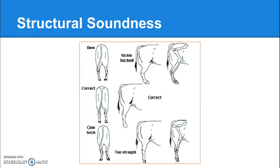If you look at the hind end of the animal from directly behind, you want to draw a straight line from the point of the hip all the way down through the middle of the foot. If they are bowed out, they're going to be toed in with hocks turned out, putting pressure on the hocks and fetlocks. If they are cow-hocked — toed out with hocks coming together — you'll put too much pressure on the stifle and hock.